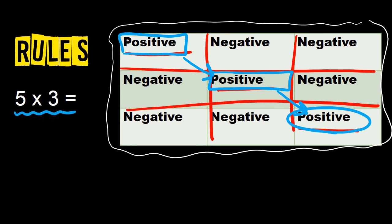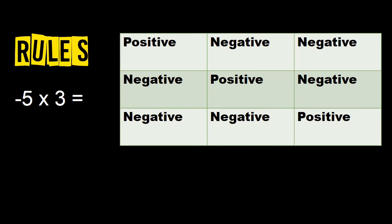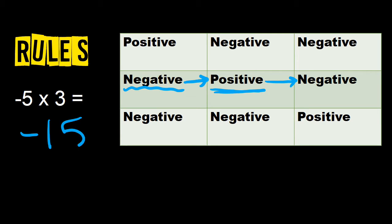So 5 times 3 — positive times a positive gives us 15. What about negative 5 times 3? We have a negative number, so let's find a negative on the board. Working across, a negative times a positive is going to give us a negative number. So negative times a positive gives us negative 15.